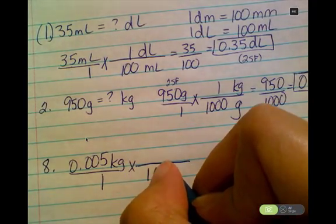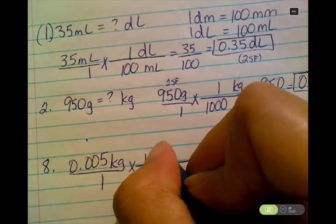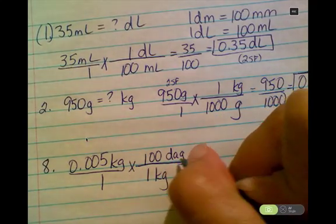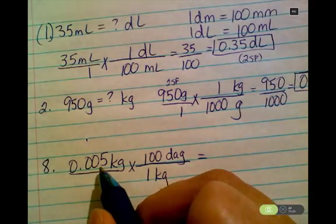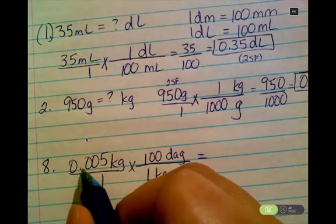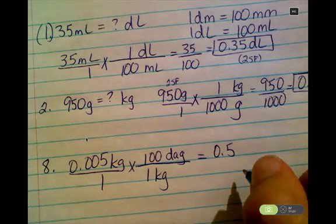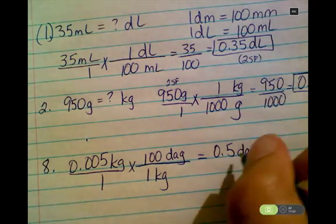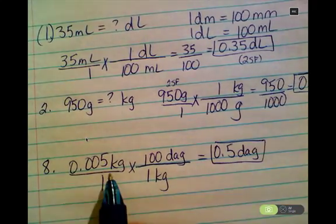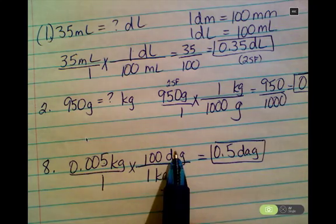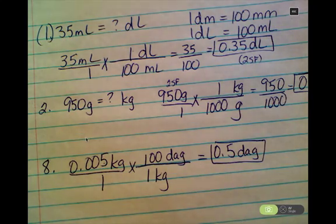So one kilogram is 100 decagrams, which means I'm doing 0.005 times a hundred. So one, two, comes out to 0.5 decagrams. I have only one sig fig in my given. It's a metric prefix problem. I have only one sig fig in my answer. And that's all you have to do.